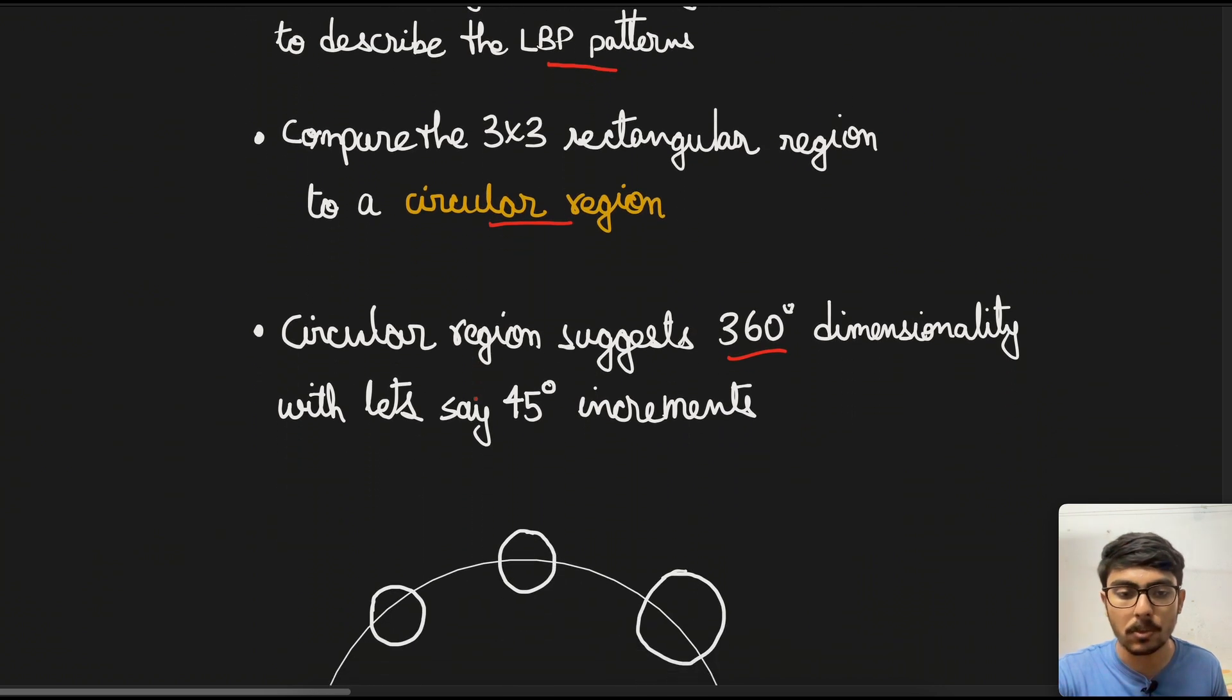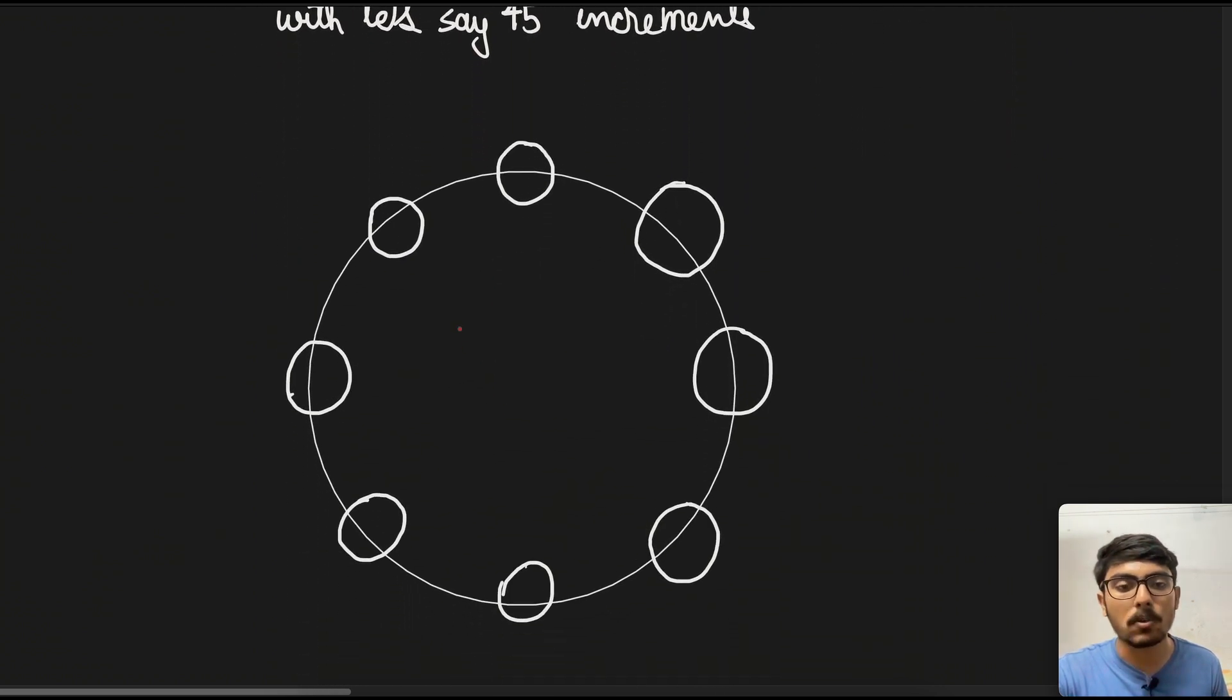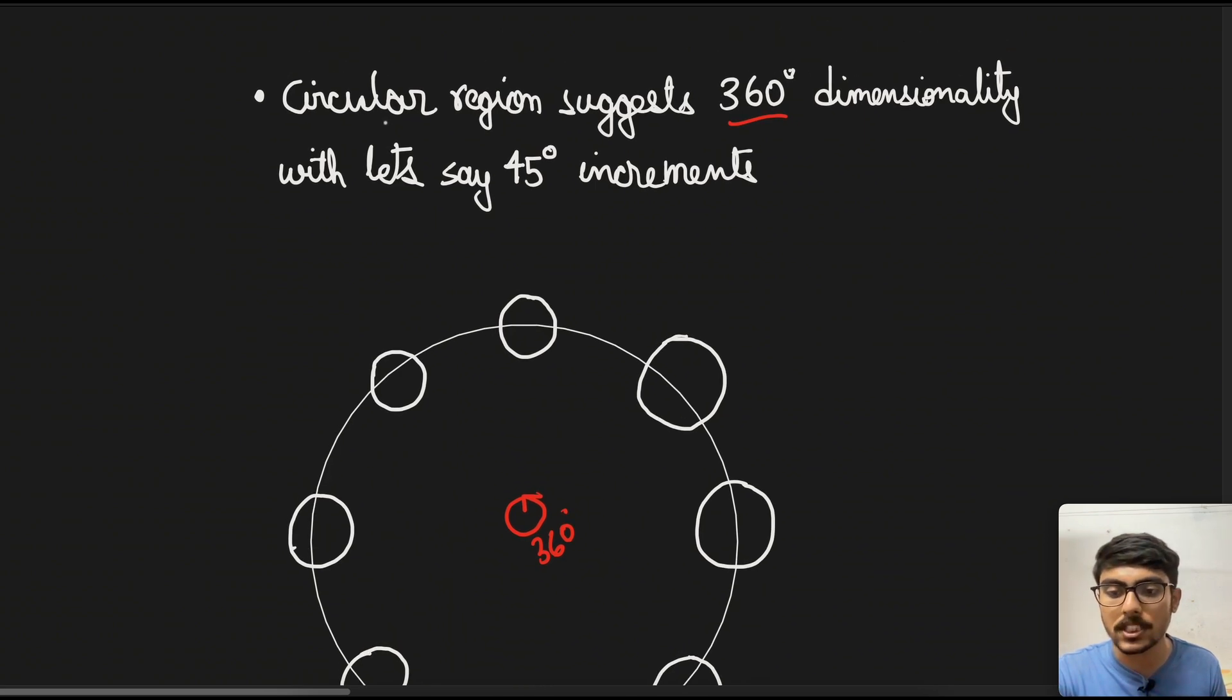In that case, circular region will suggest a 360 degree of dimensionality, and we can take 45 degrees for the increment steps and basically divide the entire 360 degrees into eight regions. If we come down, we see that we have this entire 360 degrees. Inside this 360 degrees, I have just made the outer circles at exactly 45 degree angles from each. This is how we divide the entire 360 degrees into eight regions.